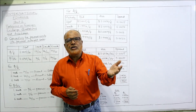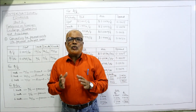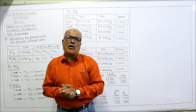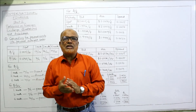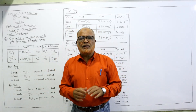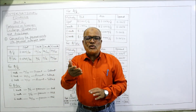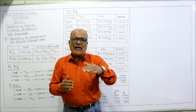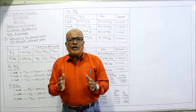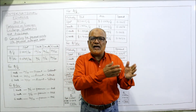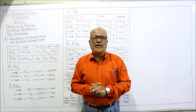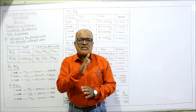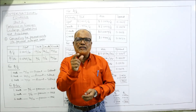I told you in the previous video that the forward rate can be given either as outright rates or points. The foreign exchange dealer will give a quotation — if he gives the quotation directly to customers, he gives outright rates: how many units of home currency for one unit of foreign currency. That is called the outright rate, for spot as well as forward. But when transactions take place between one bank and another bank — that is wholesale dealing — in that case, points will be given, not outright rates.